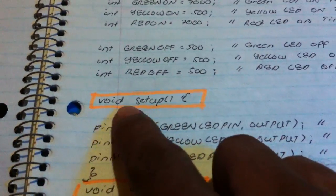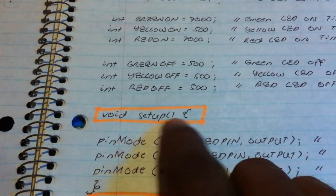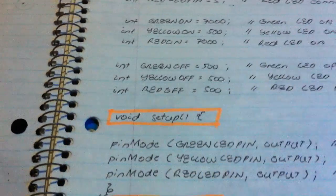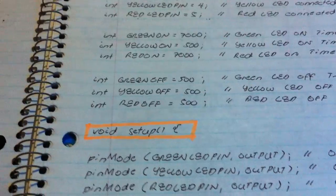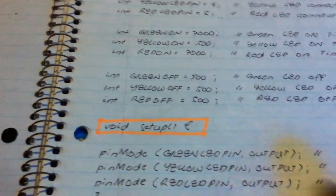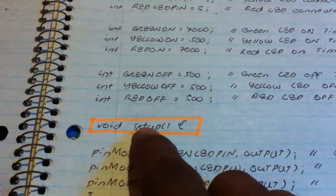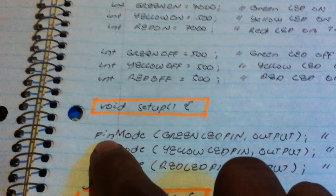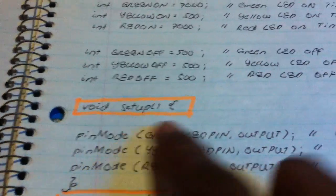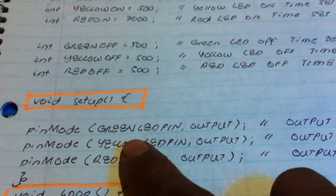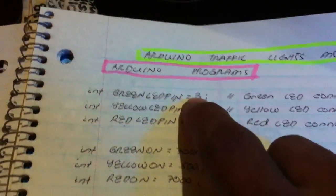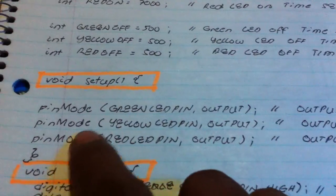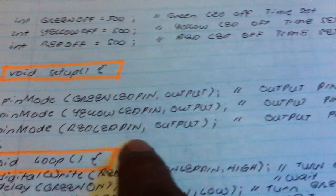For the Arduino program we have 'void setup'. The integer type is the default programming language of Arduino. 'pinMode' is also Arduino's default language — we set the green LED pin, which is terminal 3, as an output. So we have output on pin 3, and the same is done for the yellow and the red.